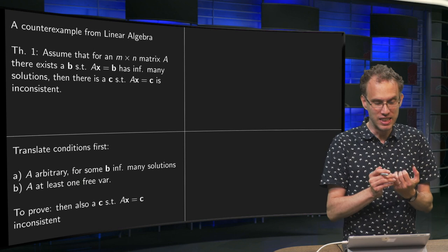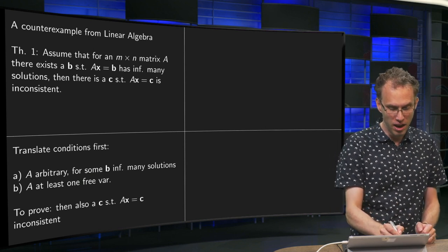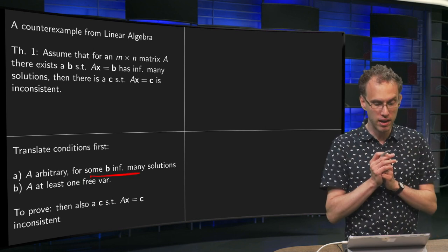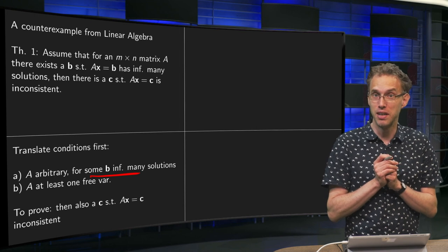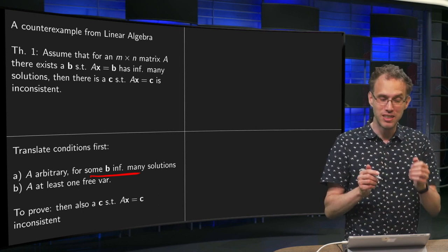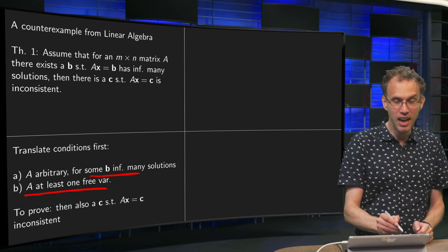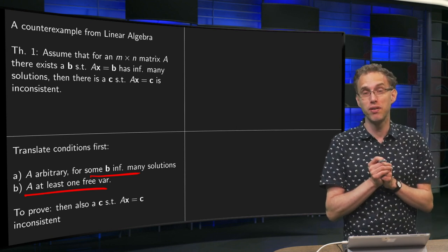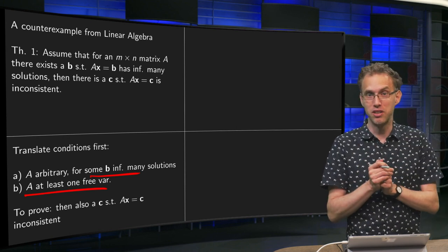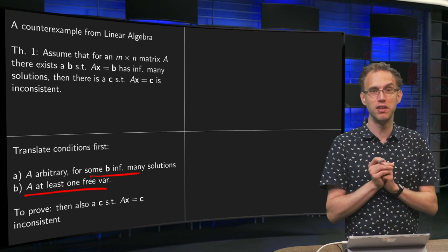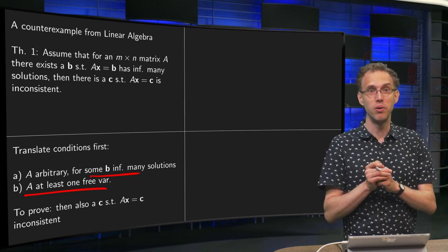So we have some matrix A, arbitrary, and there's some B such that there are infinitely many solutions. Well, that means that you know that A has a free variable, at least one free variable. Because if A doesn't have free variables, you won't get infinitely many solutions. So that's what you know.